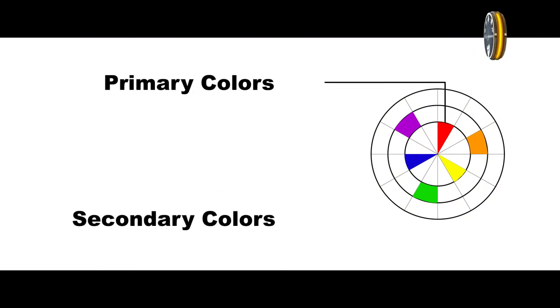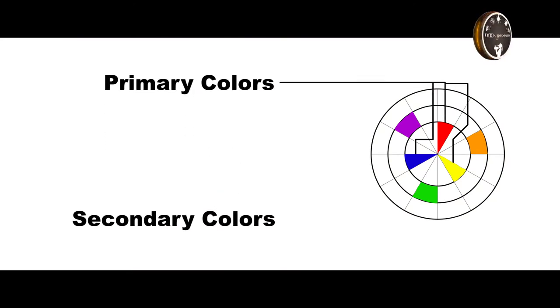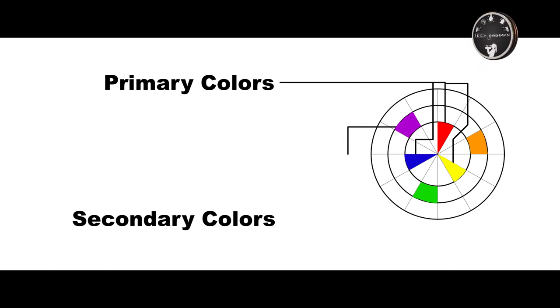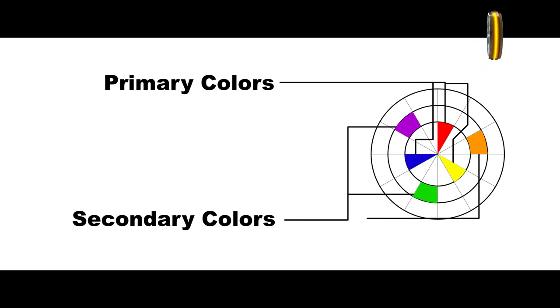Red, yellow, blue — these are the 3 primary colors. Violet, green, orange — these are the 3 secondary colors. We will add these 6 colors to the color wheel.